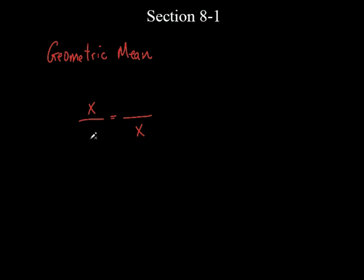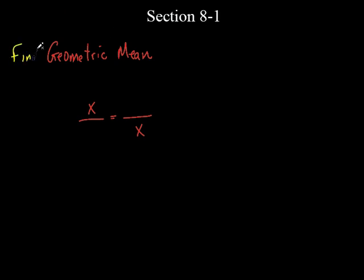Then they're going to give you two numbers — let's use three and five. They'll say find the geometric mean between one number and another number. You put three here and five in the empty spots. It doesn't matter which goes where as long as they're diagonal to each other. The x is the geometric mean — that's what you're trying to find, so you solve for x.